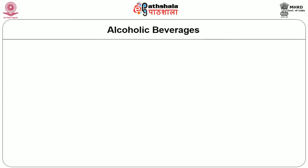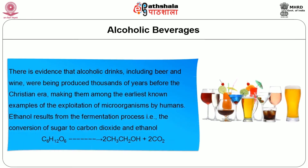First, let us see about alcoholic beverages. There is evidence that alcoholic drinks including beer and wine were being produced thousands of years before the Christian era, making them among the earliest known examples of the exploitation of microorganisms by humans. Ethanol results from the fermentation process, that is the conversion of sugar to carbon dioxide and ethanol: C6H12O6 is converted to CH3CH2OH and carbon dioxide.